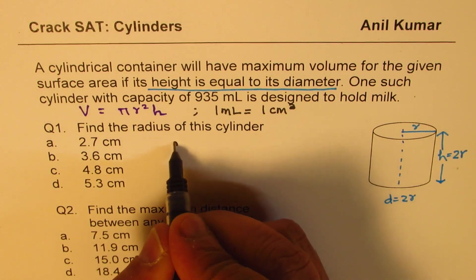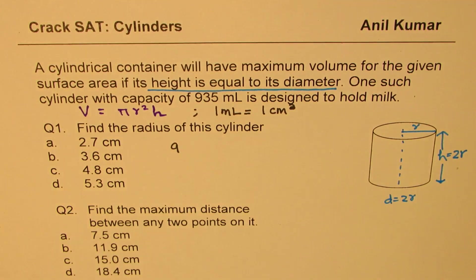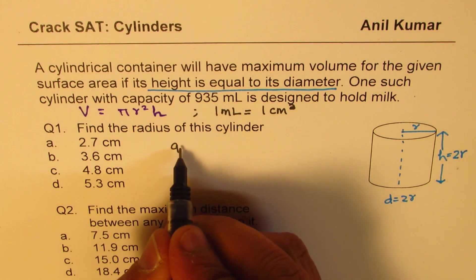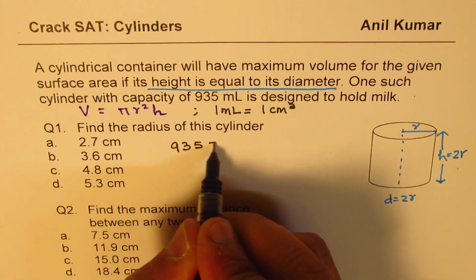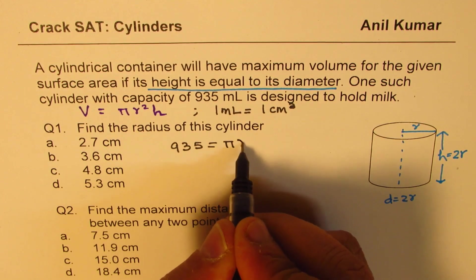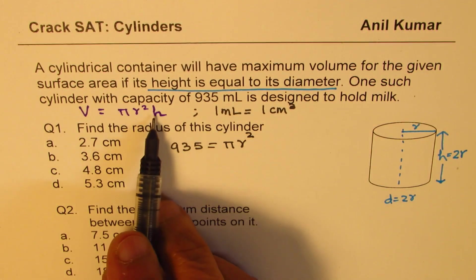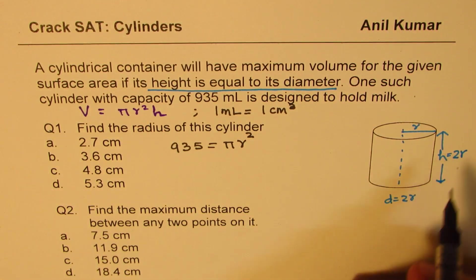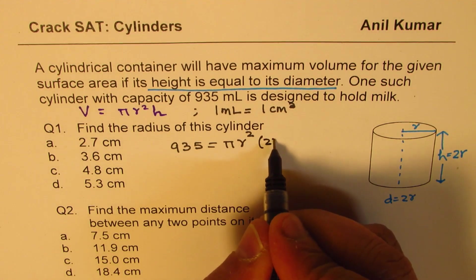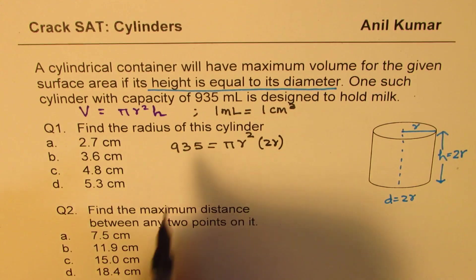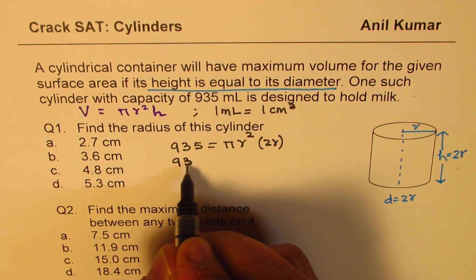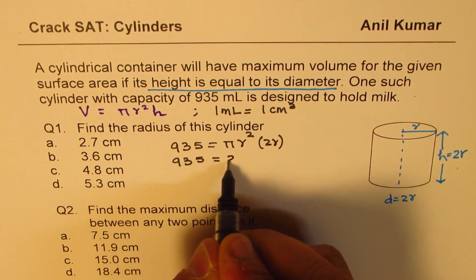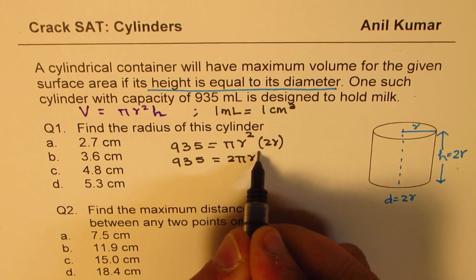Now, 935, so dimensions in centimeters is fine. 935 is the volume, should be equal to pi times radius squared. Let's replace height with 2r since height is same as the diameter. So we'll write this as 2 times r. So that gives you 935 equals 2 pi r cubed.